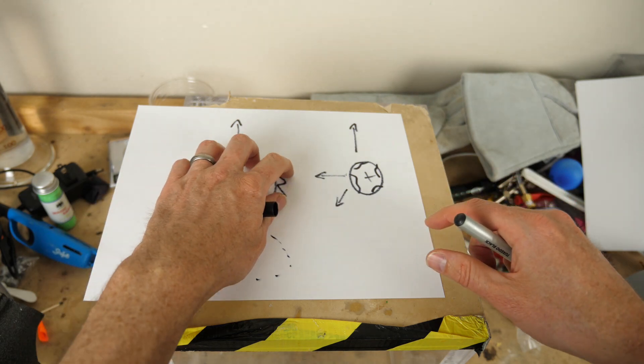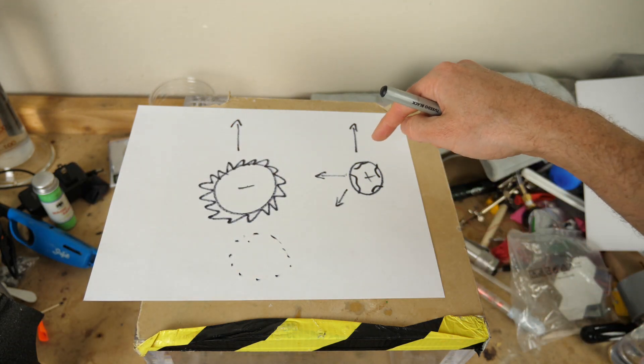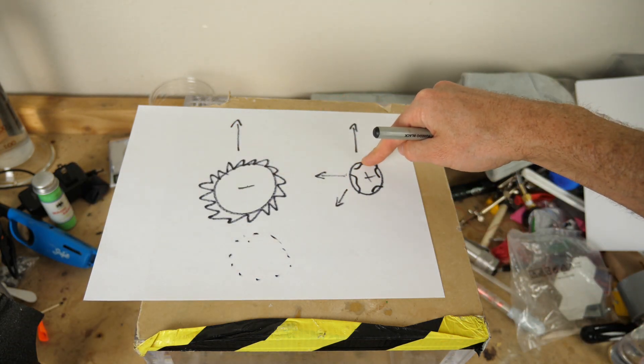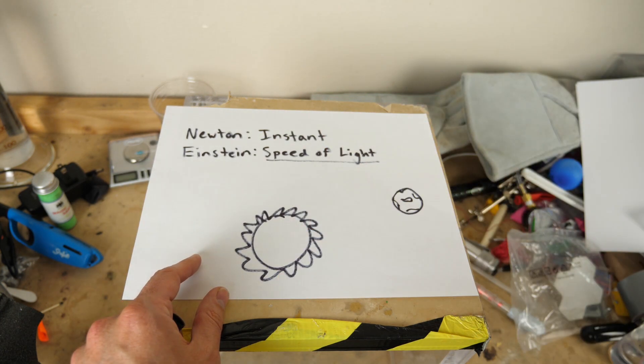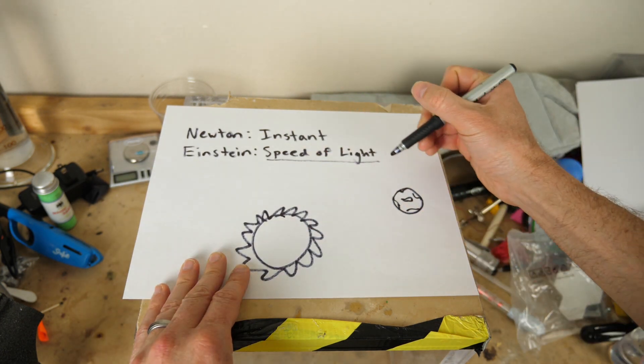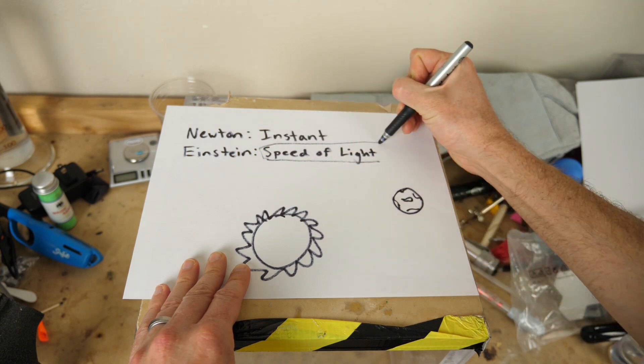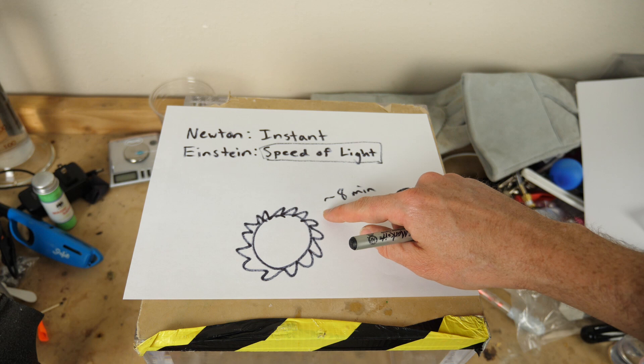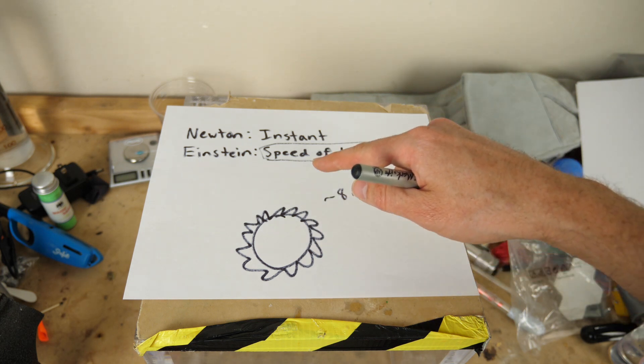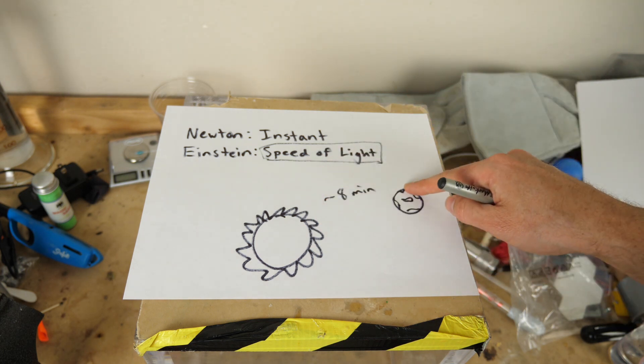So the answer is if the sun were to suddenly disappear, the effect of it reaching the earth would travel at the speed of light and it would take around eight minutes to reach earth. Exactly the same amount of time that it would take for the last bit of sunlight from the sun to reach the earth.